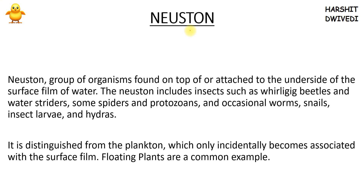The very first topic I am going to talk about is neuston. Neuston is a group of organisms. They include whirligig beetles, water striders, spiders, protozoans, some worms, snails, larvae, and hydra.